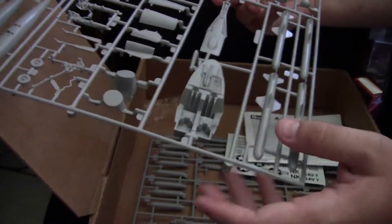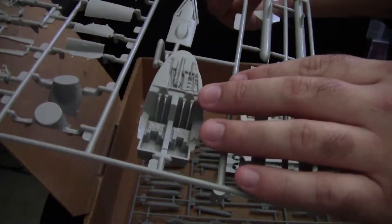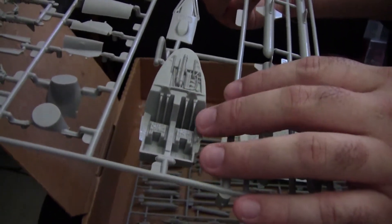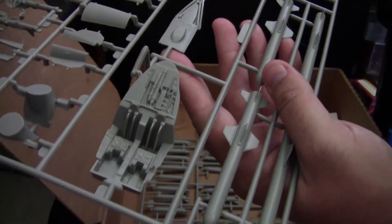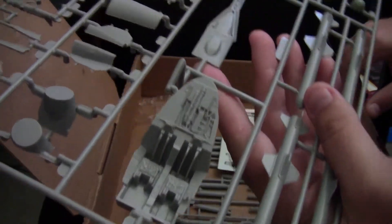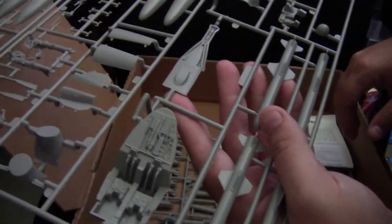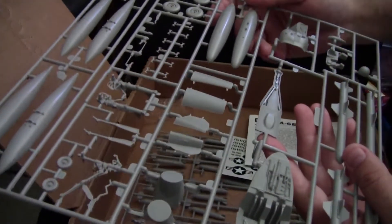Continuing on, we have our cockpit tub, which again, for the age is alright. It would be nice if these seat bottoms were separate to make it easier to paint, but it is what it is. Sorry, I'm having to adjust my positioning.